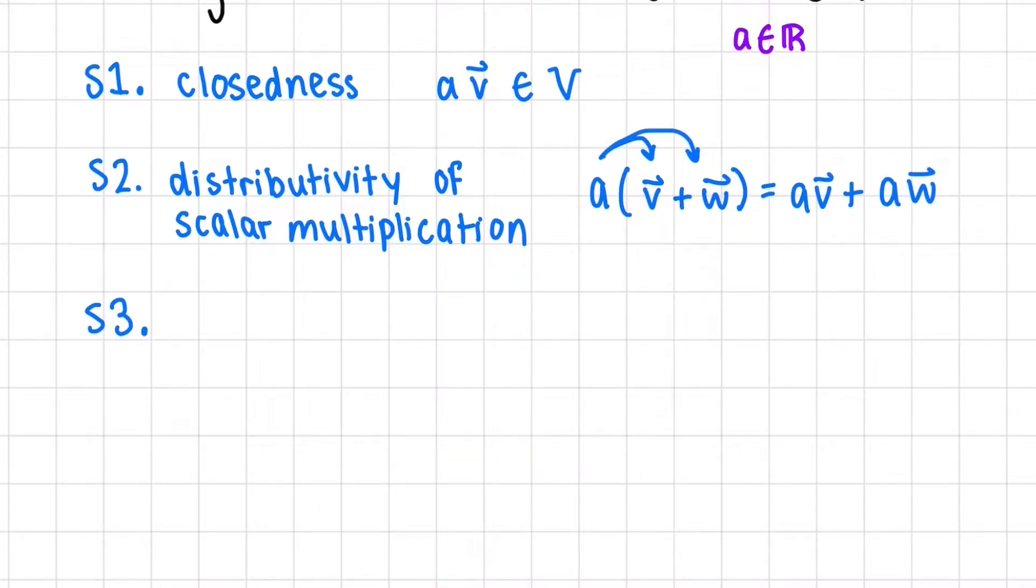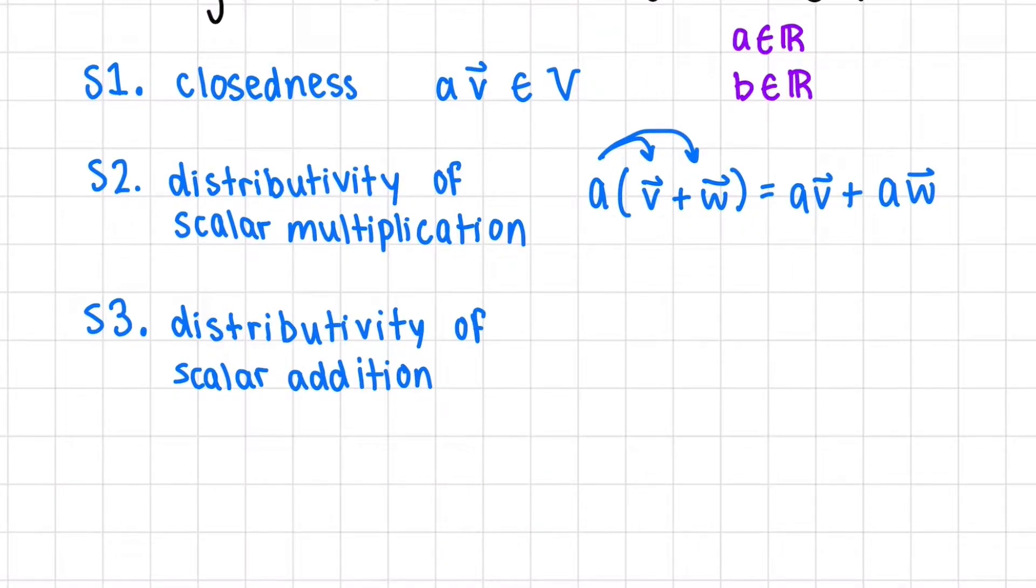The third axiom is similar. It's distributivity of scalar addition. B is also a scalar. So if we have A plus B times a vector V, this is the same as doing A times V plus B times V.